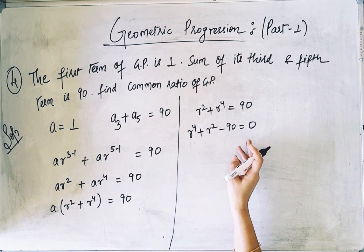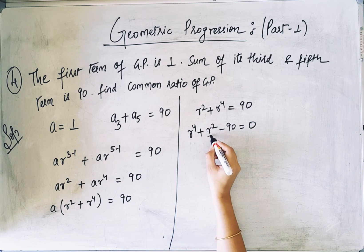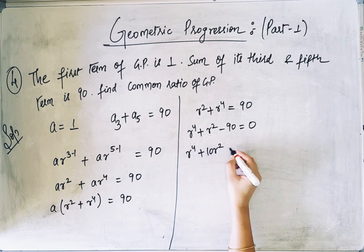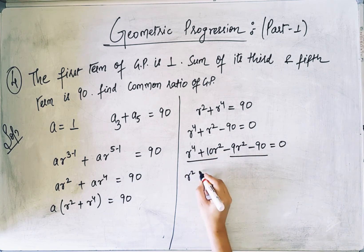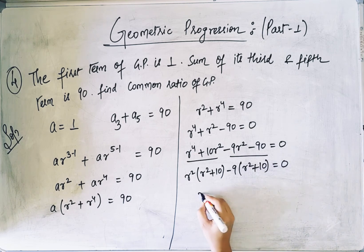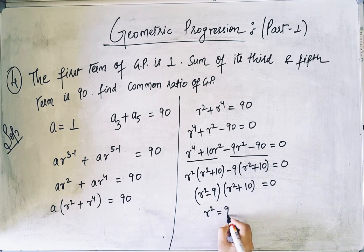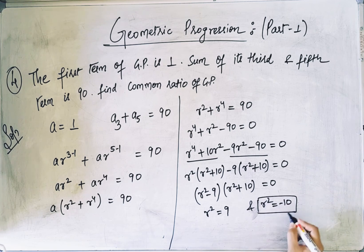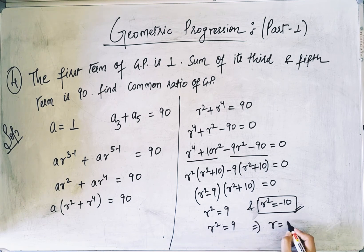So r⁴ + r² − 90 = 0. This is a biquadratic equation. Splitting the middle term: r⁴ + 10r² − 9r² − 90 = 0, giving r²(r² + 10) − 9(r² + 10) = 0, so (r² − 9)(r² + 10) = 0. Since r² = −10 is negative and not valid, we take r² = 9, thus the common ratio r = 3.